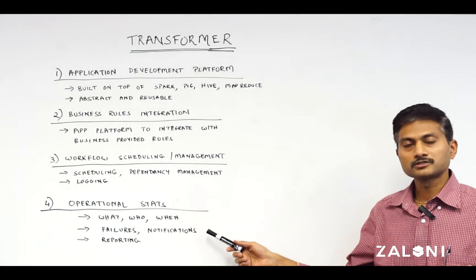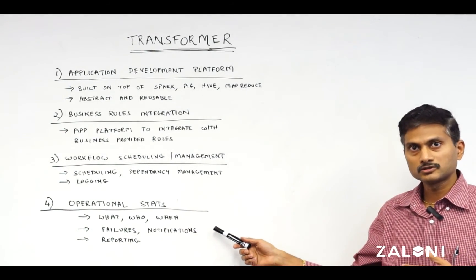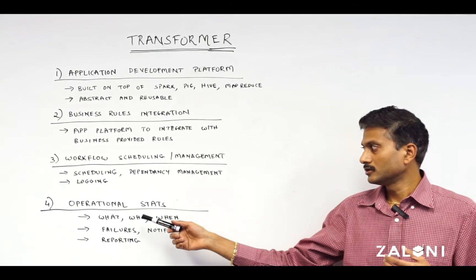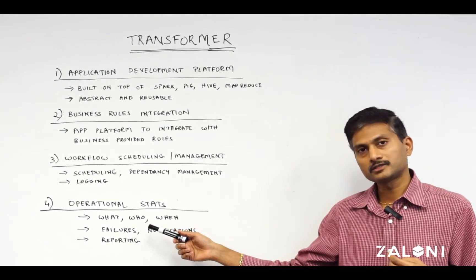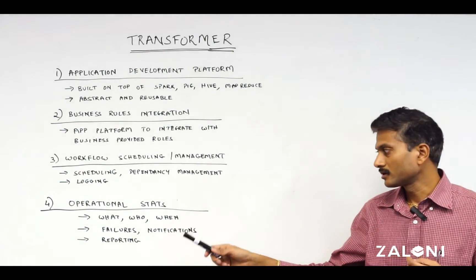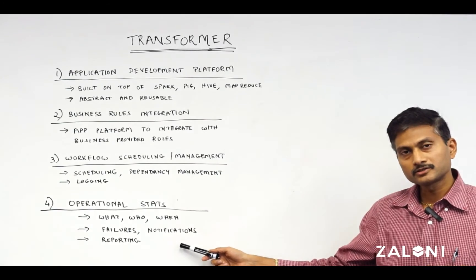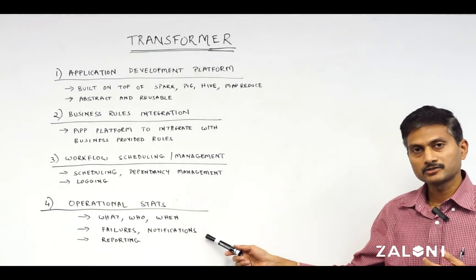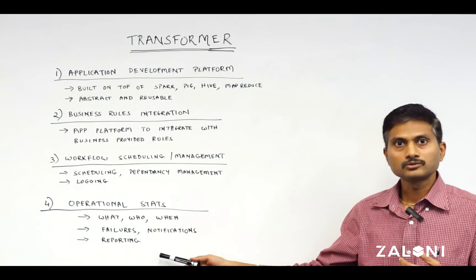Four, it must have operational stats that it collects and reports, which includes who ran the workflow, what, and when. What are the failures, how do you notify in case there's an SLA miss, and also the reporting.